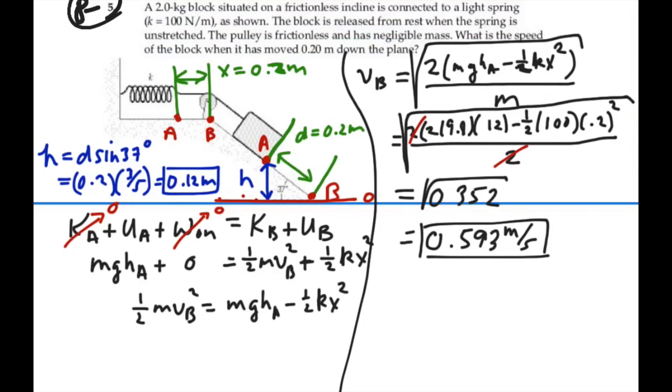change that to centimeters per second, then that's approximately 59.3 centimeters per second. So that is our velocity at point B, 0.593 meters per second.